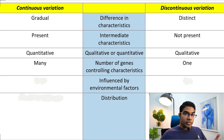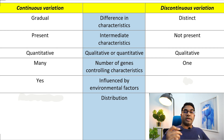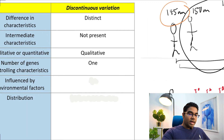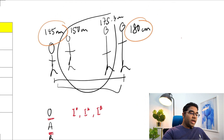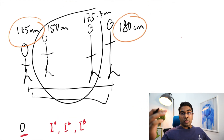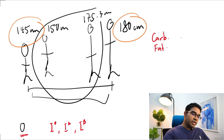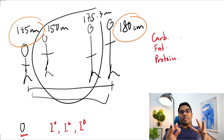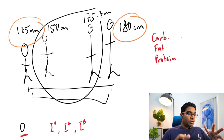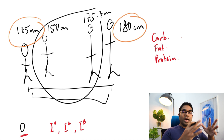Characteristics that show continuous variation are usually influenced by environmental factors, such as height. Even though you may have genes to grow very tall, if you do not have the required nutrients — you need to take in enough carbohydrates, enough fats, enough proteins, as well as all the other classes of food — you need to be supplied with the proper nutrition to grow to the height that your genes will allow you to grow to.